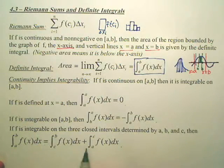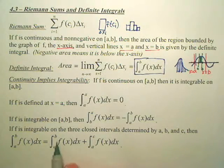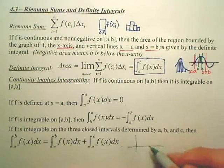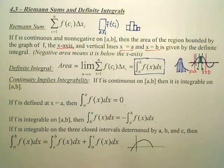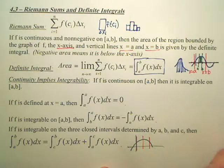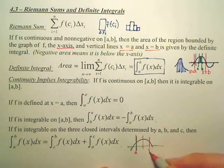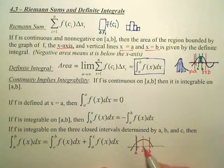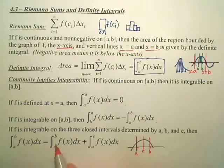If you have multiple intervals and want to find the integral from A to B, you can break it up into A to C plus C to B — you can basically find the area of two intervals and add them together. If I want the area underneath this curve, I could find the area from here to here, and then the area from here to here. The area under the curve from A to B is the same as A to C plus C to B.